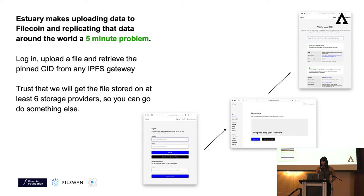Estuary makes uploading data to Filecoin and replicating it around the world a five-minute problem, because the deal between the client and the storage provider is replicated six times. So if a storage provider decides they don't want to be on the network anymore, you still have five other storage providers to get your data from, and you can access it everywhere.